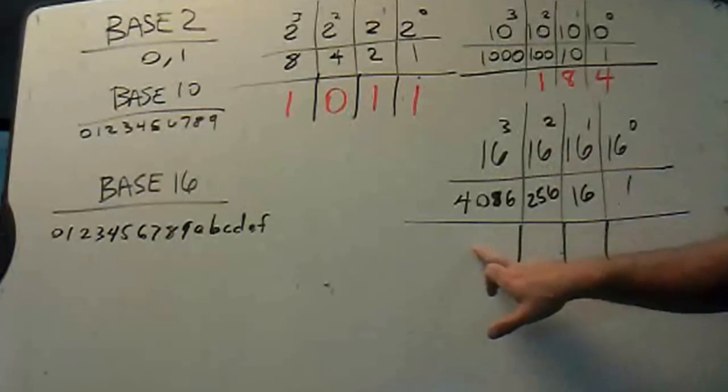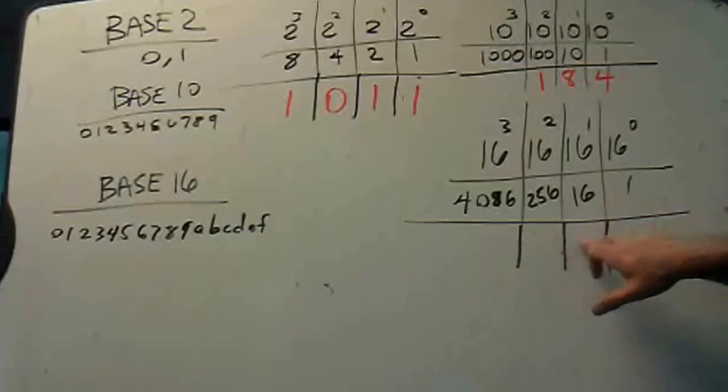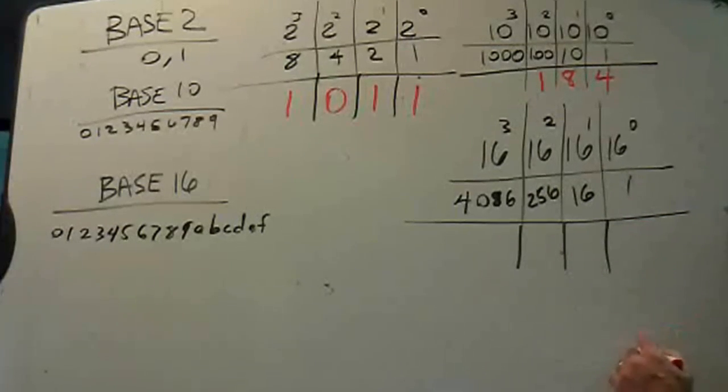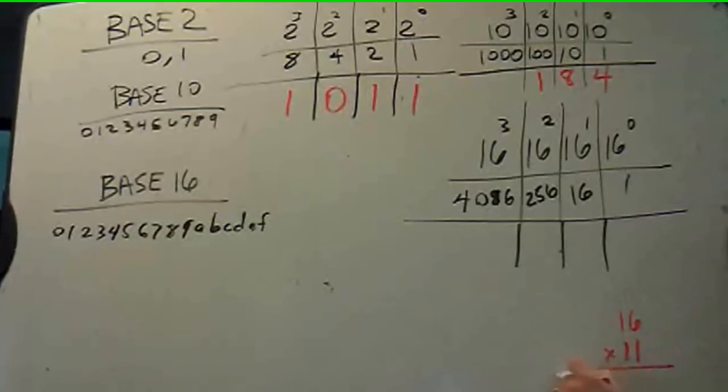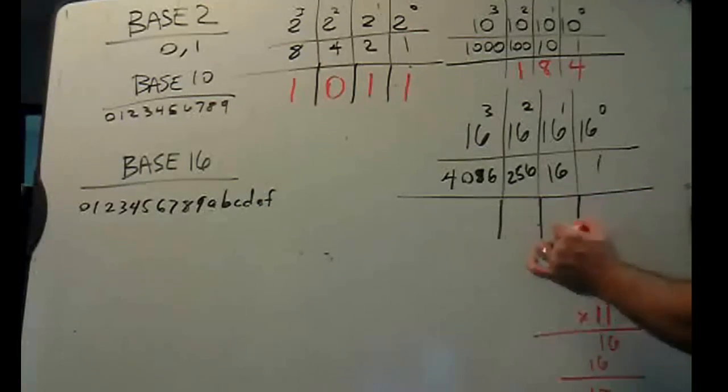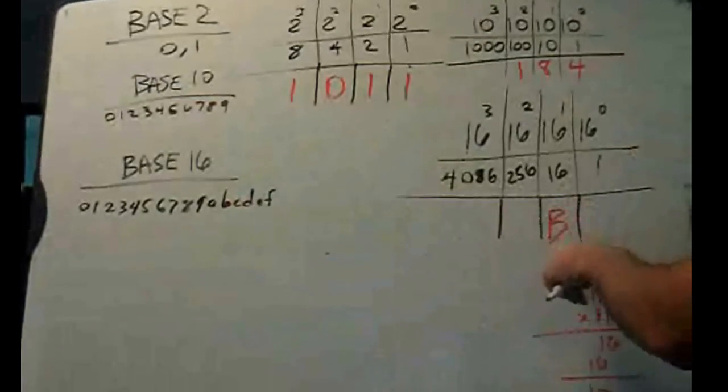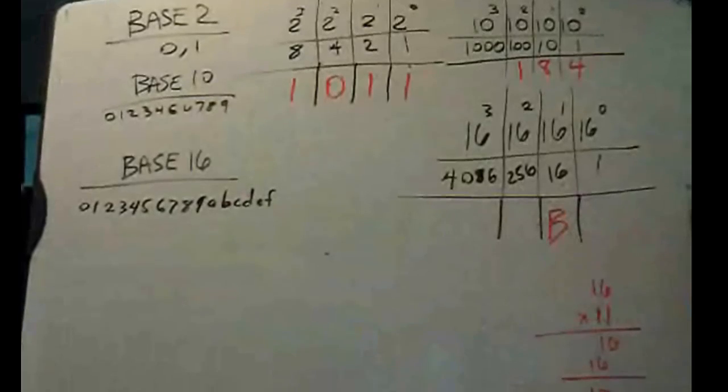How many 4,096's will I need? None. How many 256's will I need? None. But how many 16's will I need? Well, I'm going to need some 16's. If I do 11 times 16 is 176. So, I'm going to need 11 sixteens. But I don't write 11, I write B. So, I'll put a B in here, because a B stands for 11 in hexadecimal notation. So, that's 176.